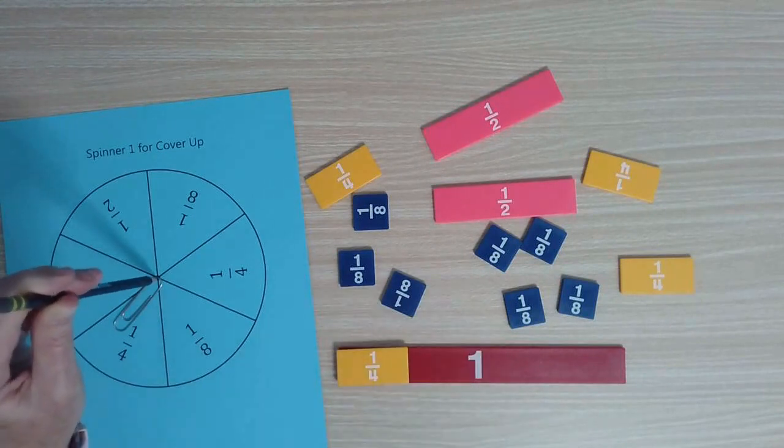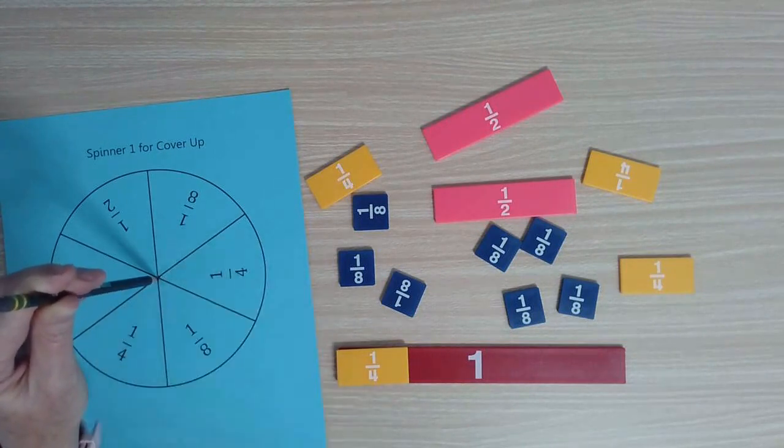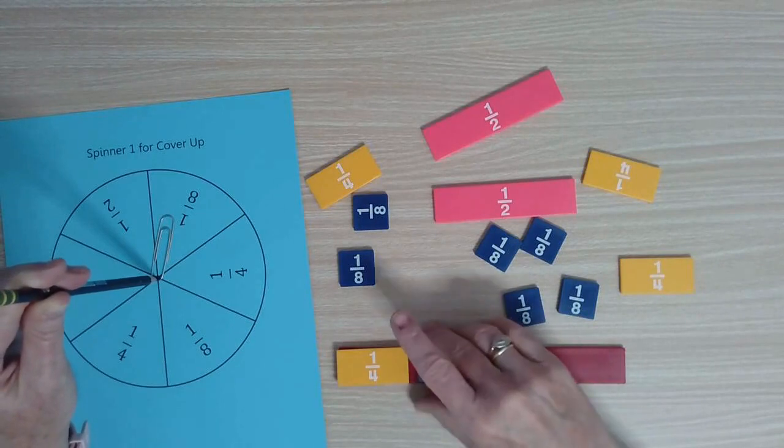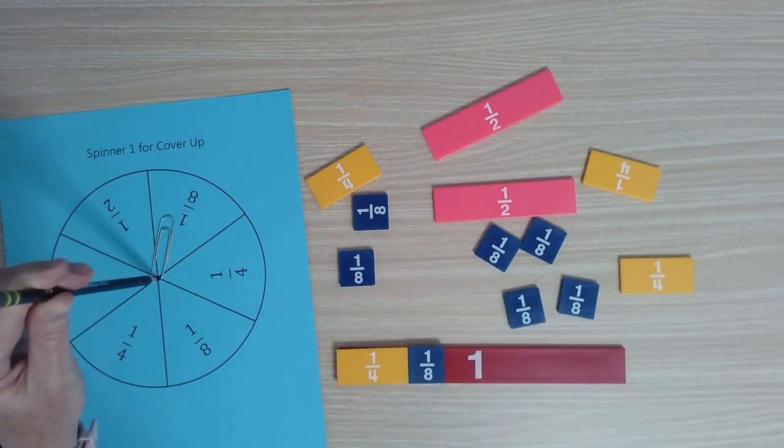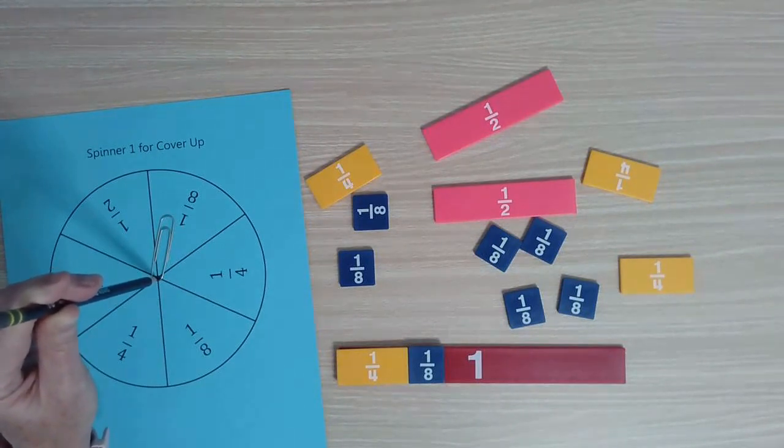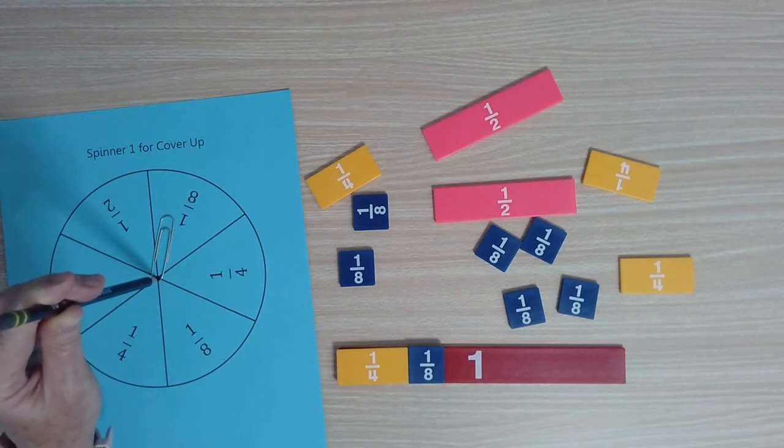You can assume we're going around and each player takes their turn spinning. It gets back to me, I spin again, and now I get one-eighth. At this point, if I'm playing this game in small group instruction, a great question I can ask is, which of those fractions is greater? One-fourth or one-eighth?